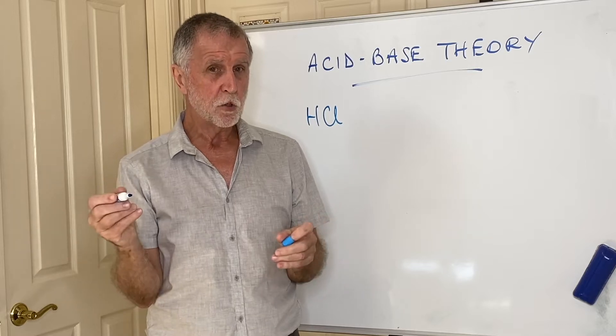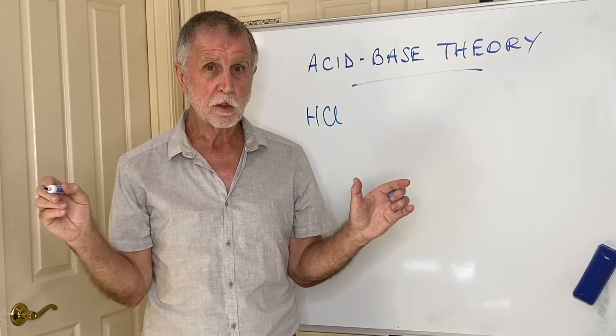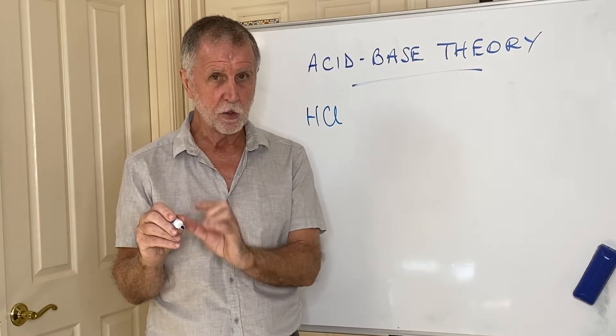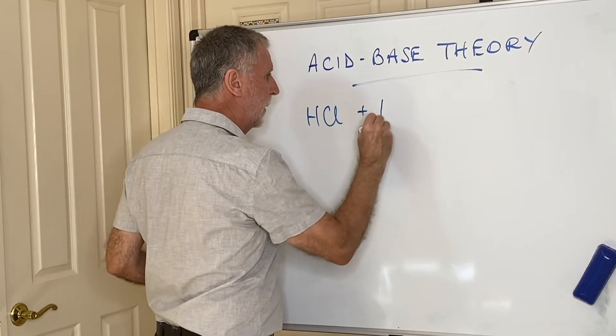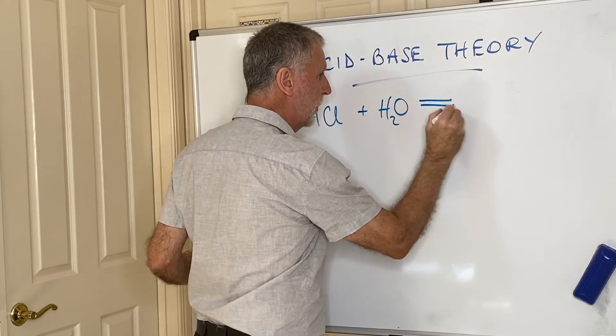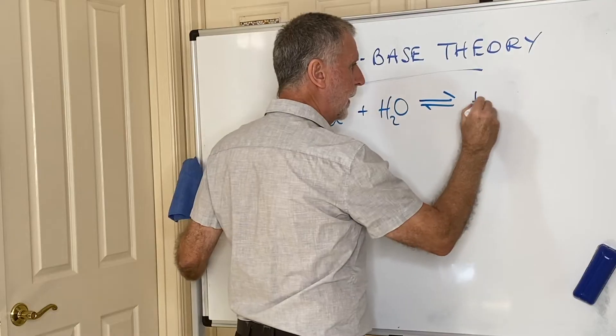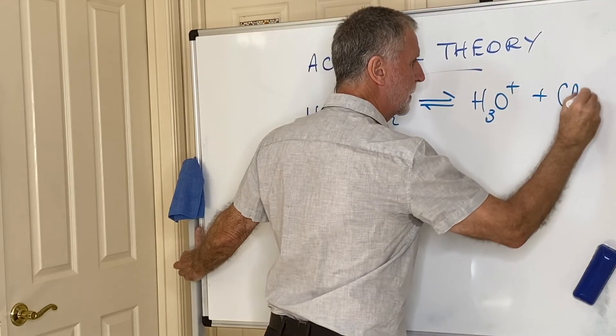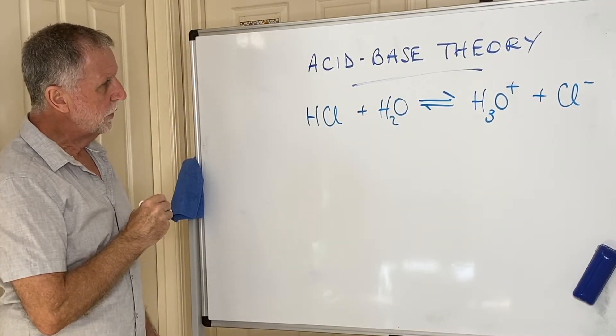If you were to test the pH of HCl gas in a dry environment, there would be no acidity shown on that pH scale. HCl gas becomes an acid when water is present. And when water is present, we get a system set up where H3O+ and Cl- are being formed. So let's have a little look to see what's going on here.